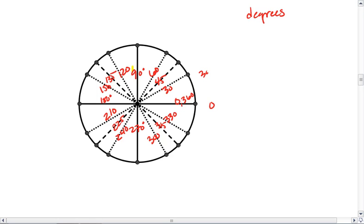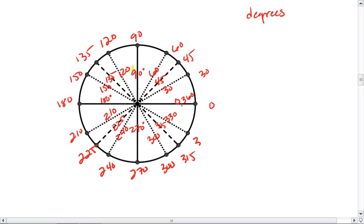So 0, 30, 45, 60, 90, 120, 135, 150, 180, 210, 225, 240, 270, 300, 315, 330. These are all degrees.